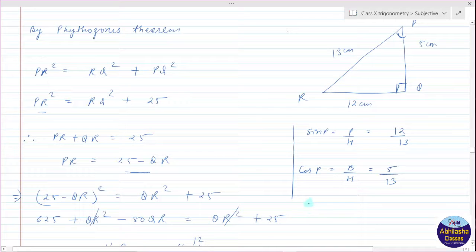Then tan P. So tan P is perpendicular upon base, so perpendicular is 12 and base is 5, so it is 12 by 5. So this is the answer.